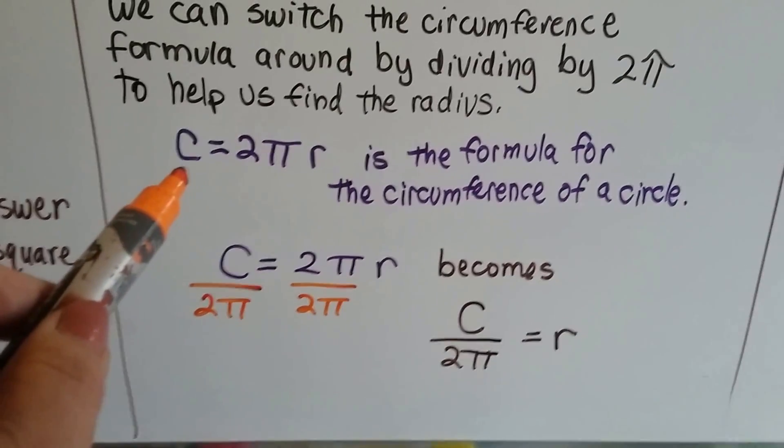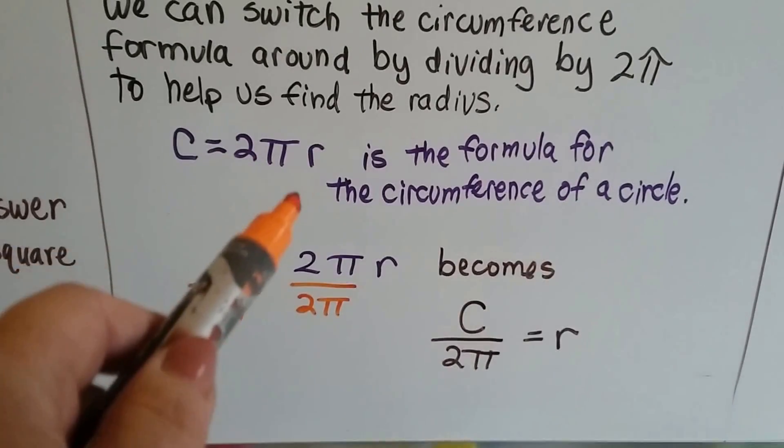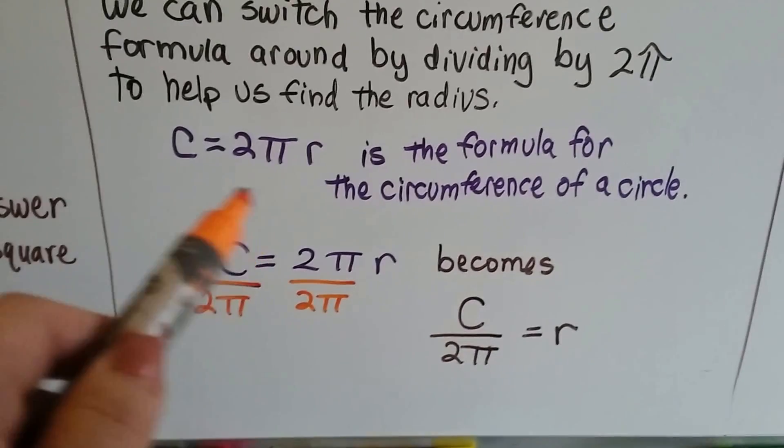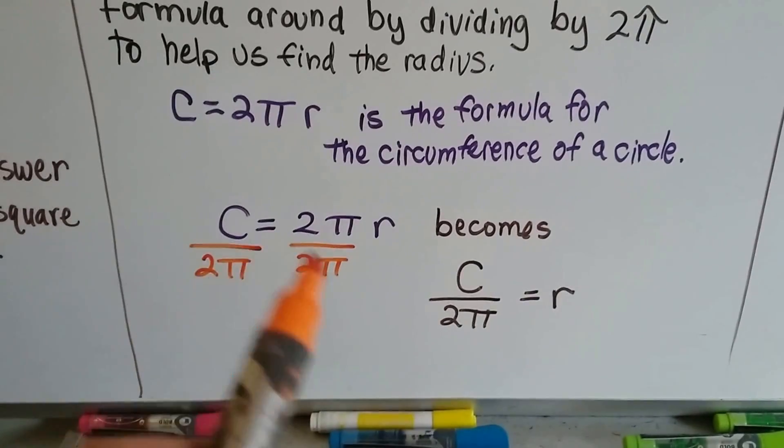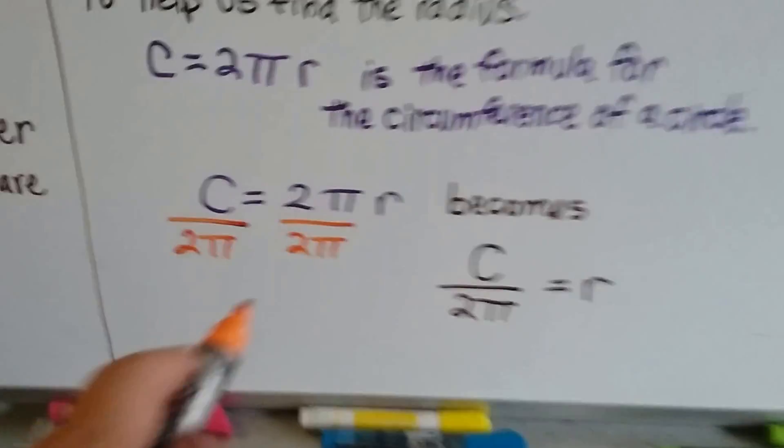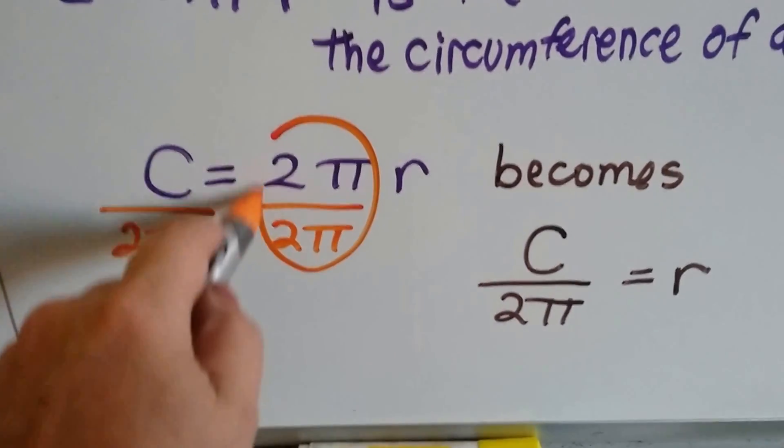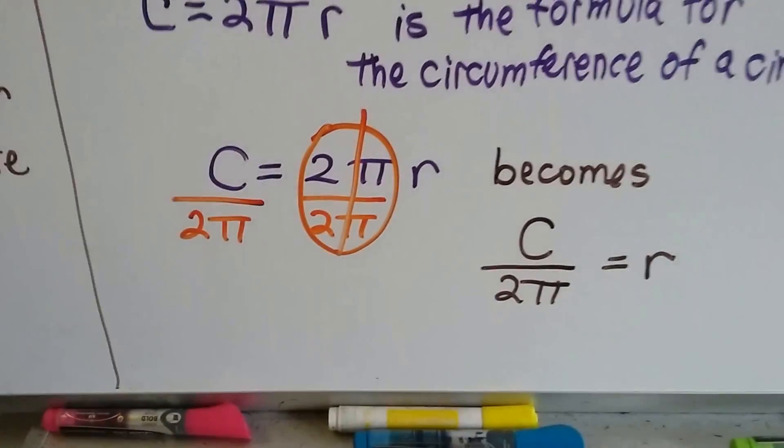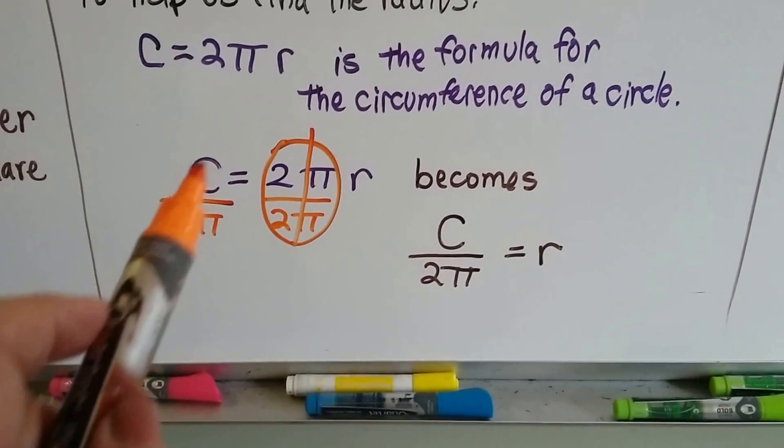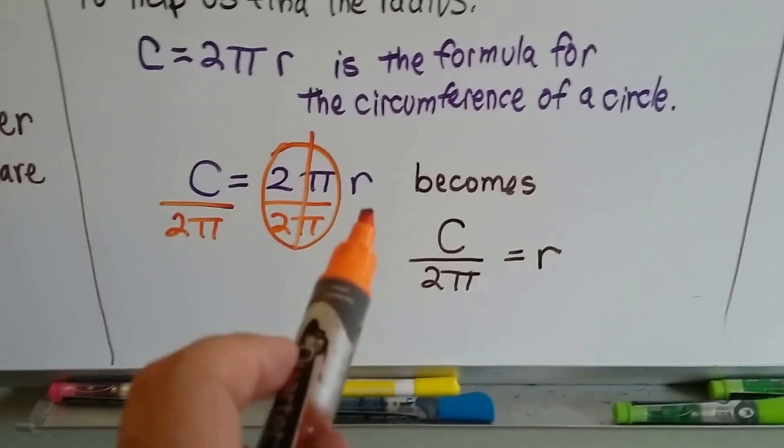So, the formula, C equals 2 pi r, that's the formula for the circumference of a circle. We divide both sides by 2 pi, and what that does is, it eliminates this 2 pi and it becomes a 1, and our formula becomes C divided by 2 pi equals r.